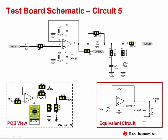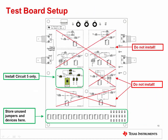This slide shows the full schematic for circuit 5 on the TI Precision Labs test board. You will use this circuit to measure the stability of the OPA277. For the test board to function properly, it is important that you only install jumpers and devices in circuit 5. Do not install any jumpers or devices in any other circuits on the PCB. Remove any jumpers or devices from the unused circuits and store them in the storage area at the bottom of the test board.